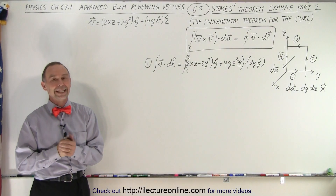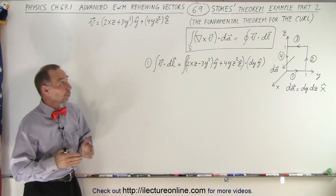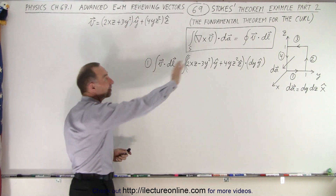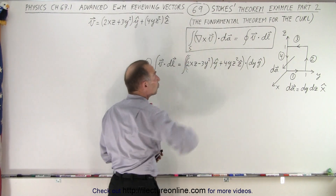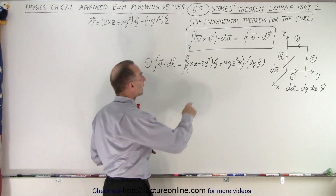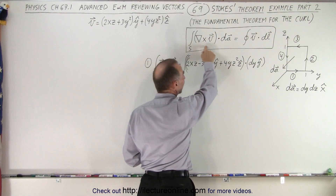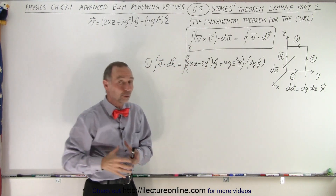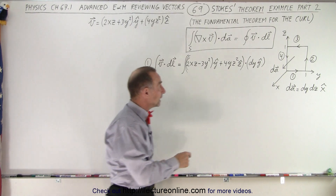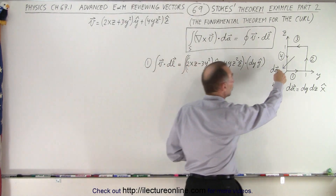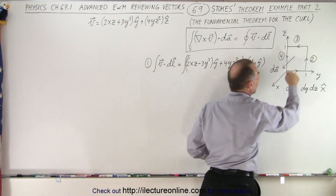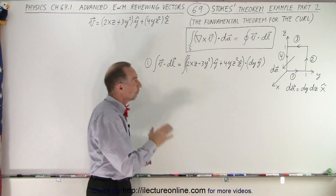Welcome to ElectronLine. In this video we're going to do part two. We're going to show that the right side equals the left side in Stokes Theorem. On the previous video we calculated the left side — it ended up being four thirds — so the right side better add up to four thirds. Notice that we need to integrate along this closed loop and there are four separate stages we have to go through.